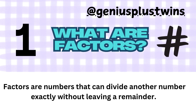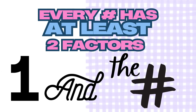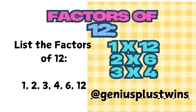Let's get into an example. But before we do that, I want to note that there are always two factors to every number: one and the number itself. The first example is we're going to find the factors of 12. I know that 12 divided by 1 equals 12 — it goes in evenly. I also know that 1 times 12 equals 12. So 1 and 12 are factors. Don't forget: every number has at least two factors, 1 and itself.